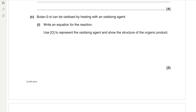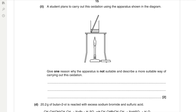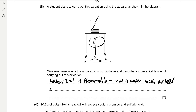Butan-2-ol can be oxidised by heating with an oxidising agent. When oxidising a secondary alcohol, only one product is formed — the ketone, butanone. Using [O] to represent the oxidising agent, butan-2-ol + [O] → butanone + H₂O. The apparatus shown is not suitable because butan-2-ol is flammable and an open Bunsen flame is a safety hazard. Instead, a water bath should be used and the reaction mixture heated under reflux.